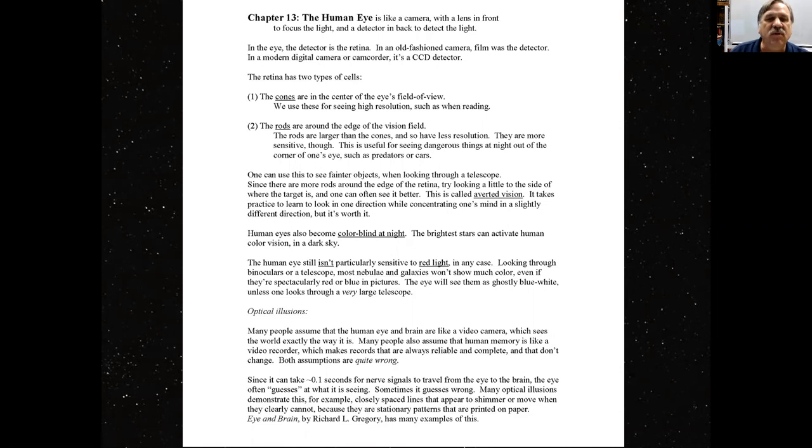So let's start with the human eye. The human eye is like a camera with a lens in front to focus the light and a detector in back to detect the light. In the eye, the detector is the retina. In an old-fashioned camera, film was the detector. In a modern digital camera or camcorder, it's the CCD detector.